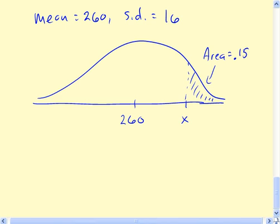This problem asks us to determine the length of the longest 15% of pregnancies. So here's what the distribution of pregnancy lengths looks like. It has a mean of 260, a standard deviation of 16, and it's normally distributed. So we're interested in the value of x that will correspond to an area here of 0.15. So this region up here corresponds to the longest 15% of pregnancies.